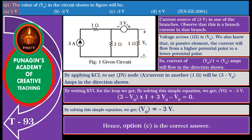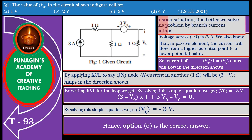In this problem, we are required to find voltage V0. We find that there is a current source of 3 amperes in one of the branches — this is a branch current in that branch. In such situations, it is better to solve this problem by the branch current method.